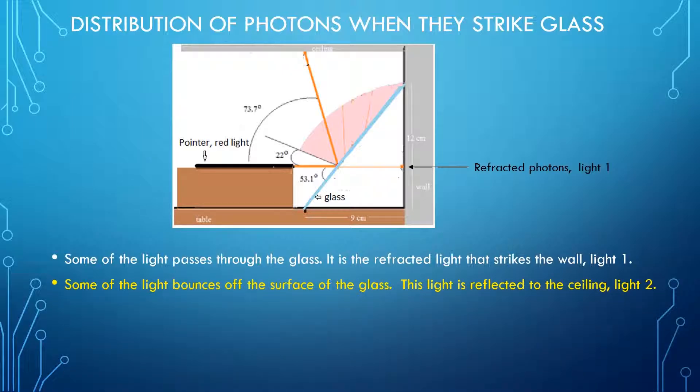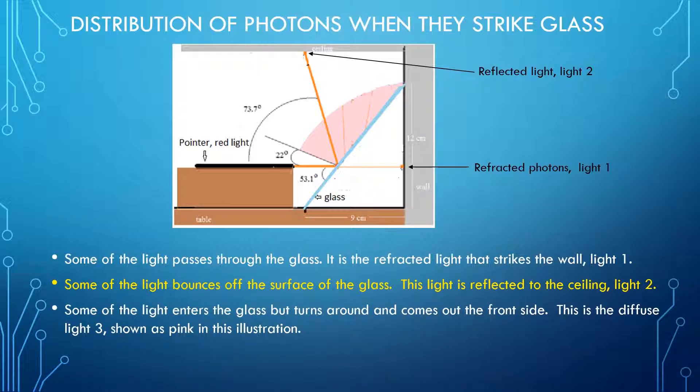Some of the light bounced off the surface of the glass. This light is reflected to the ceiling. This is shown in the illustration as light number two. Some of the light enters the glass but turns around and comes out the front side of the glass. This is the diffuse light number three, illustrated in pink on the slide. Now I would like to examine these three bands of light in a little bit more detail.